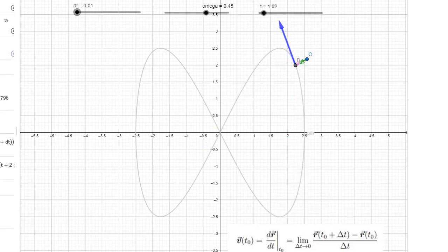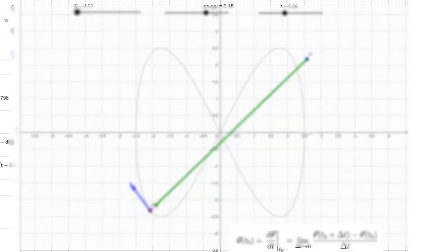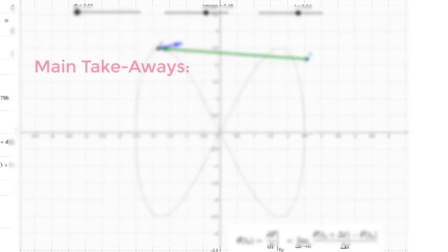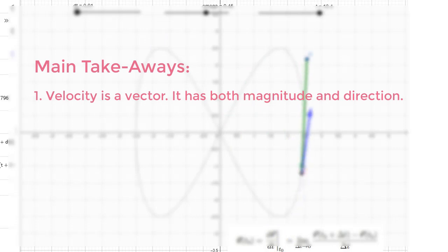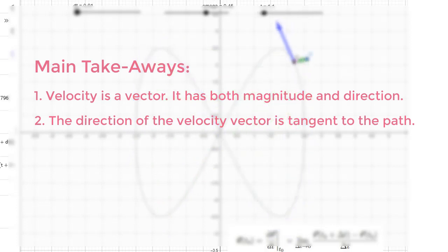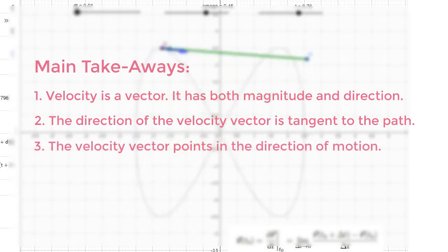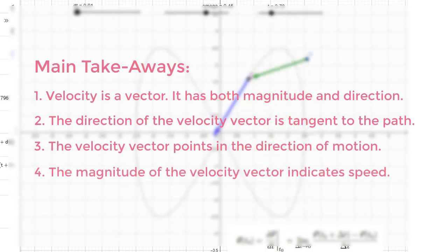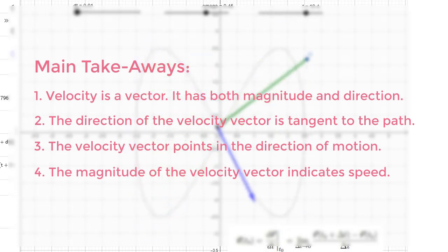Before we finish, let me recap the main points. First, velocity is a vector — it has both magnitude and direction. The direction of the velocity vector is tangent to the path. Tangent to the path can mean forward or backward along the path, but the velocity vector points in the direction of motion — the direction the object is actually moving. Finally, the magnitude of the velocity vector indicates speed: how fast the object is moving. And that's it.